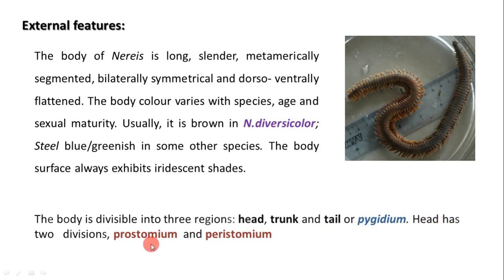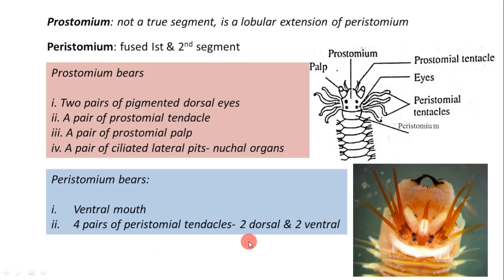The head region is further divided into prostomium and peristomium. The prostomium is not a true segment; it is a globular extension of the peristomium. The segments begin from the peristomium. From the peristomium there is an anterior extension called the prostomium. The peristomium is actually formed by the fusion of the first and second segments, and prostomium and peristomium together constitute the head region.